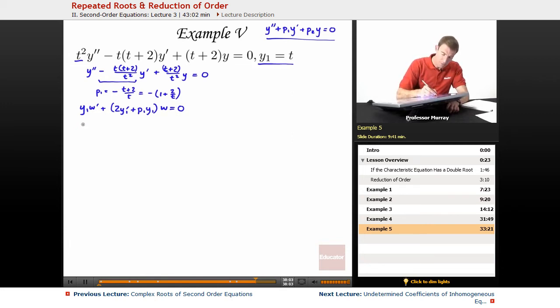I'm going to fill in everything I know. y1 is t, so that's t times w prime plus 2 times y1 prime. y1 prime is just the derivative of t, so that's 2 times 1 plus p1, which is negative, so I'll do negative 1 plus 2 over t, and y1 is t times w equals 0.